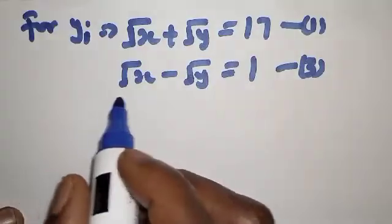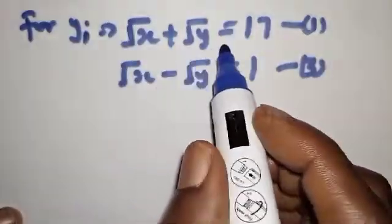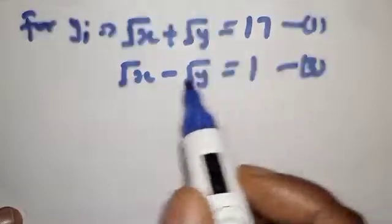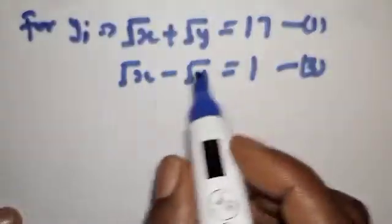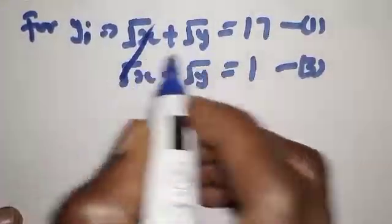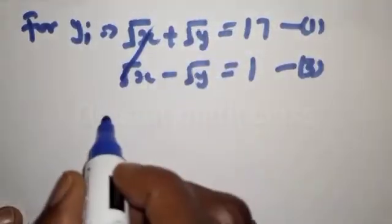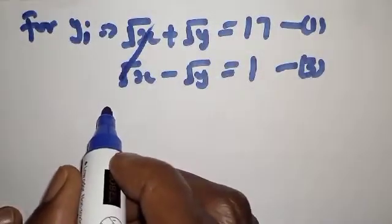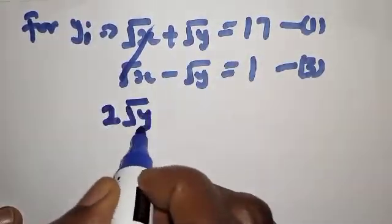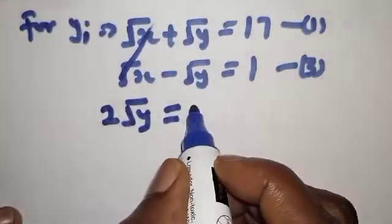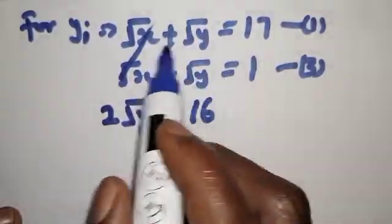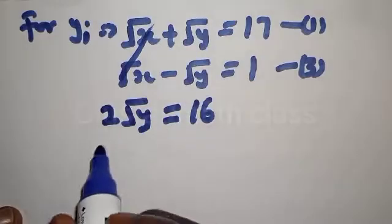Now for Y, let's subtract equation 3 from equation 1. The square root of X terms cancel, and we are going to have 2 times square root of Y equal to 17 minus 1, which is 16. We then divide both sides by 2.